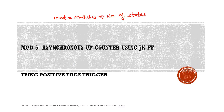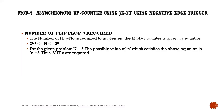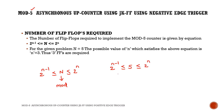Let us see the working of mod 5 asynchronous up counter using JK flip-flop with positive edge trigger. The first step is to determine the number of flip-flops needed. The formula for a mod counter is: 2^(n-1) ≤ N ≤ 2^n, where capital N is the mod value given in the question (here it is 5) and small n is the number of flip-flops.